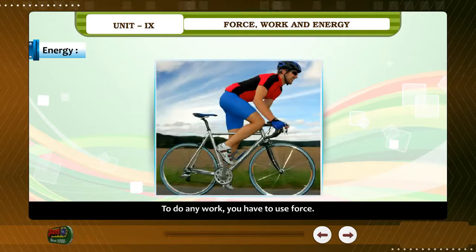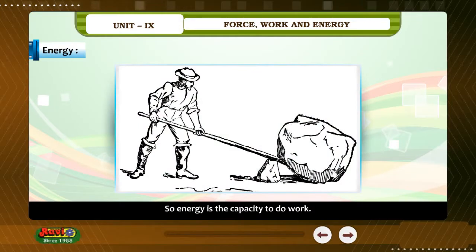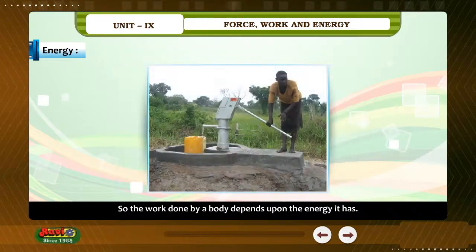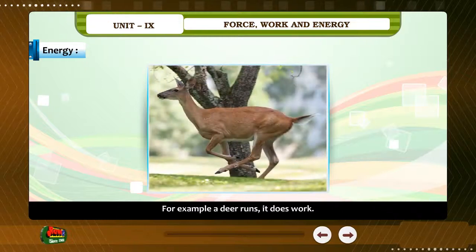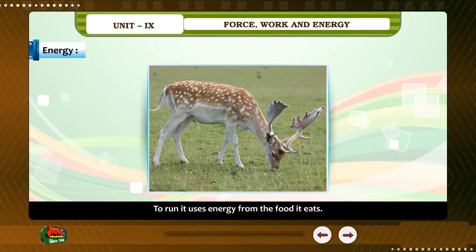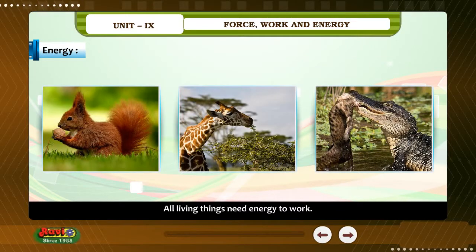Energy. To do any work, we have to use force. And to use force, you need energy. So energy is the capacity to do work. The work done by a body depends upon the energy it has. To do work, we need energy, which we get from the food we eat. All living things need energy to work.